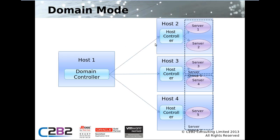A quick overview of what domain mode looks like in a system: a domain can consist of multiple physical or virtual hosts — here we've got four hosts. Every domain needs one domain controller, which provides centralized management. Every host needs a separate host controller that controls the server instances on that particular node. For example, host two has server one, two, and three — a couple of servers — and host four has one individual server. The domain controller interacts with the host controllers in order to manage the server instances, allowing you to stop and start them.